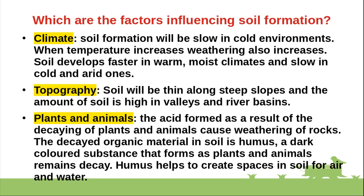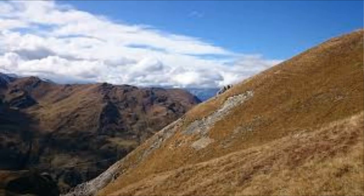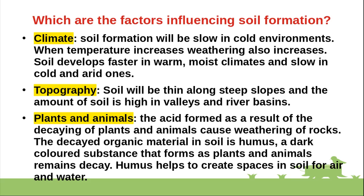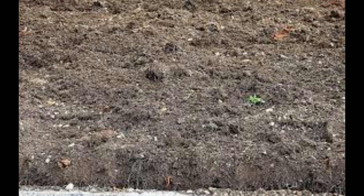Regarding topography, soil will be thin along steep slopes and the amount of soil is high in valleys and river basins. For plants and animals, the acid formed as a result of the decaying of plants and animals causes weathering of rocks. The decayed organic material in soil is humus, a dark-colored substance that forms as plant and animal remains decay. Humus helps to create spaces in soil for air and water.